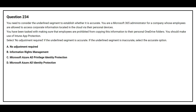Question number 234. You need to consider the underlying segment to establish whether it is accurate. You are a Microsoft 365 administrator for a company whose employees are allowed to access corporate information located in the cloud via their personal devices. You have been tasked with making sure that employees are prohibited from copying this information to their personal OneDrive folders. You should make use of Intune app protection. Select no adjustment required if the underlying segment is accurate. The correct answer is Option A, no adjustment required.